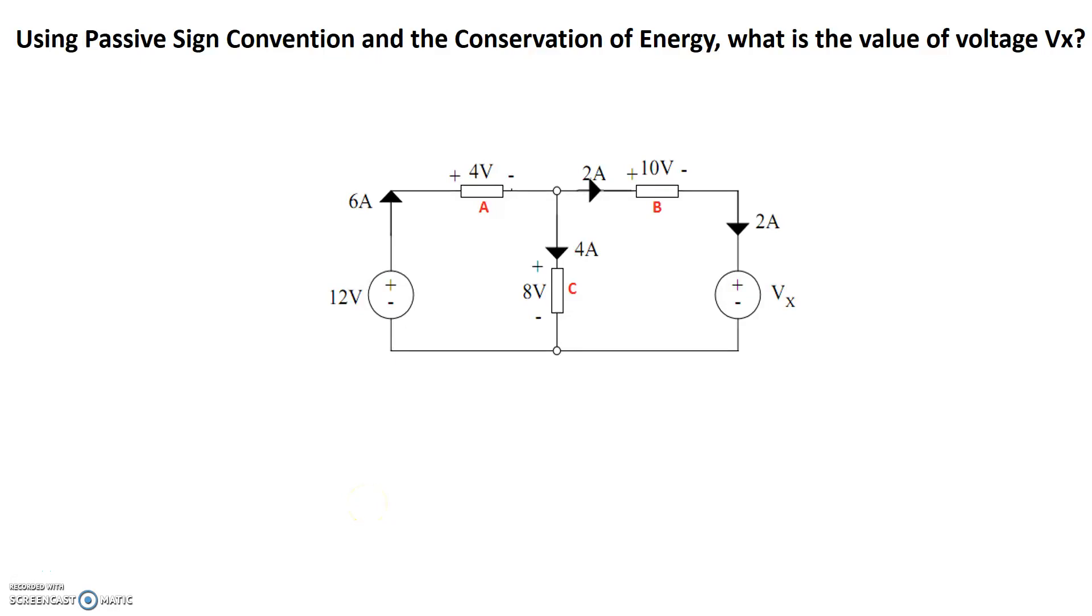We'll do one example on passive sign convention and conservation of energy to find the value of this unknown voltage source Vx. So let's start again, passive sign convention.